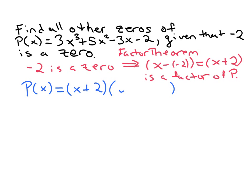And then, so there's some missing factor here. So that this is equal to 3x cubed plus 5x squared minus 3x minus two.